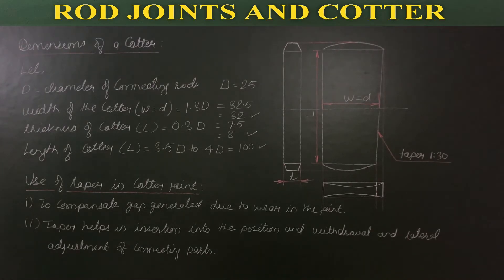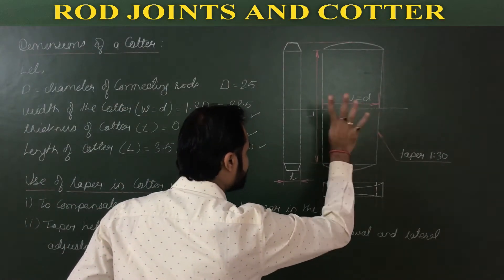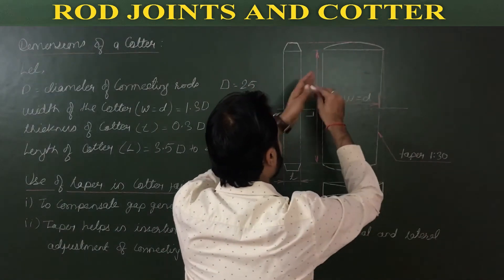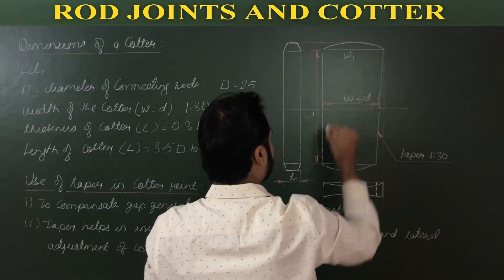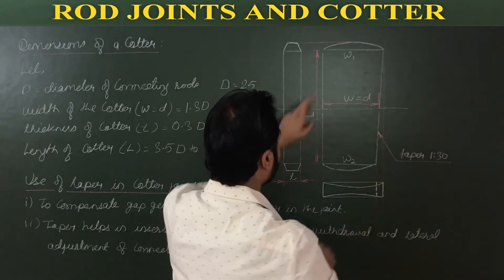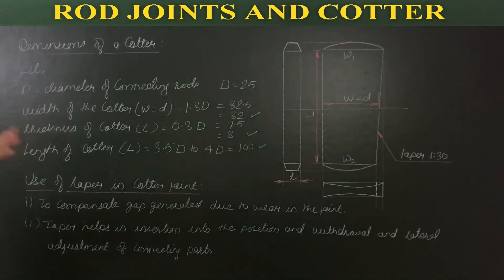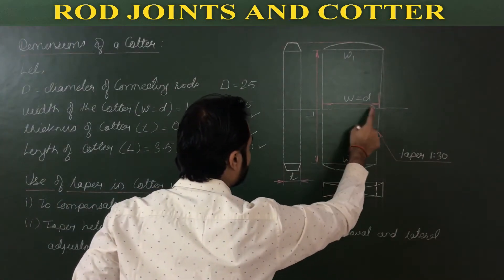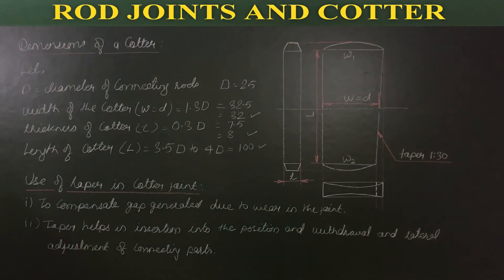Very important: if the upper width W1 and lower width W2 are given to you, it is straightforward to construct a cotter. But if the mean width is given along with the taper, say 1 in 30, then you need to calculate the upper and lower widths. Upper width W1 = central width W + x, and bottom width W2 = W − x.